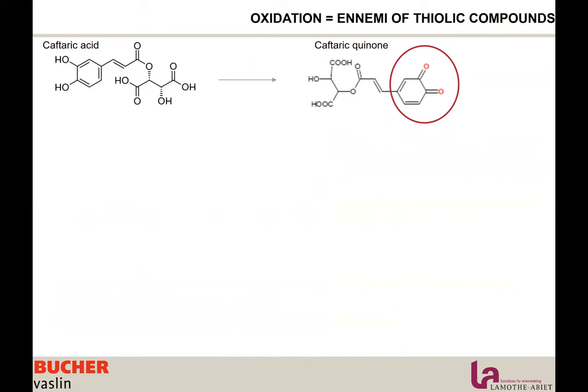Oxidation reactions in grapes and wine are complex, so I will summarize them. The story always starts with a phenol — for example, caftaric acid becoming a quinone. A quinone is a molecule with a ring and double-O, in this case a caftaric quinone. This transformation can happen in grapes and must via enzymatic oxidation, requiring oxygen and PPO or laccase when there is botrytis. It can also happen in wine via chemical reactions, where oxygen is activated into a radical via redox reactions with iron or copper, oxidizing the phenol into a quinone.